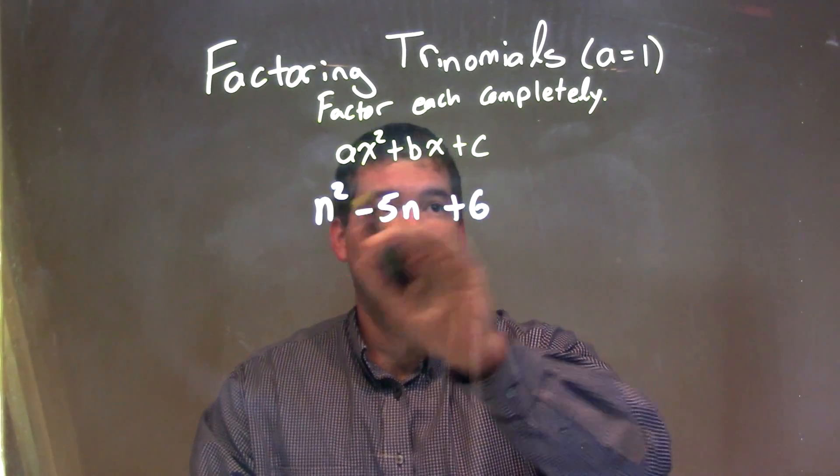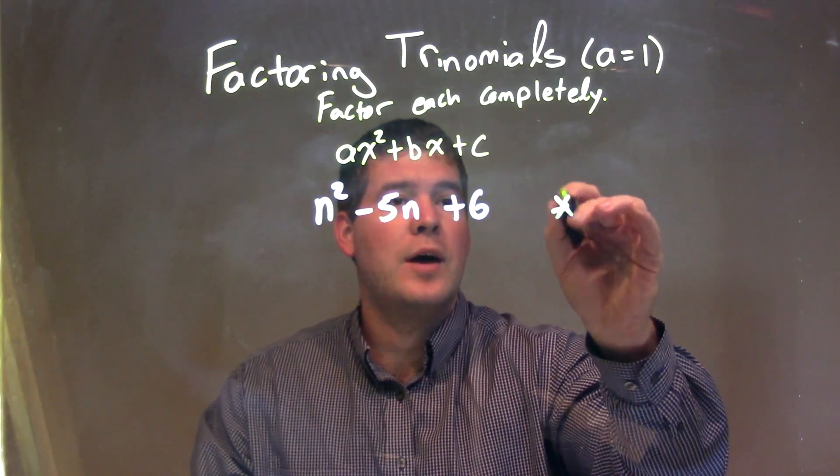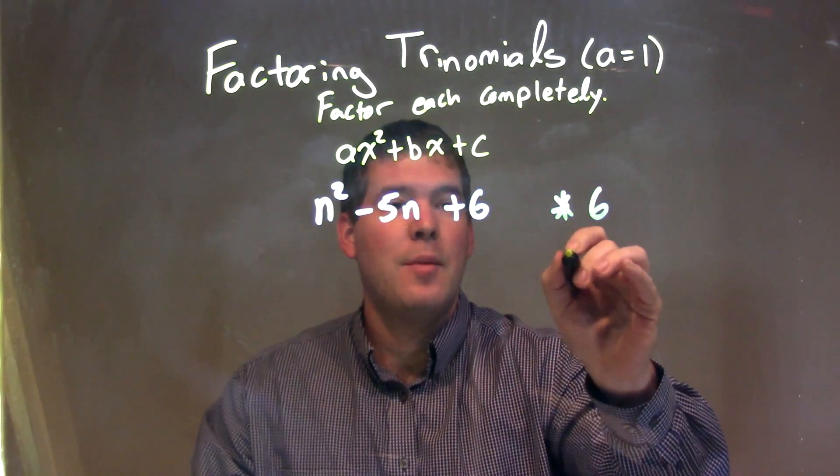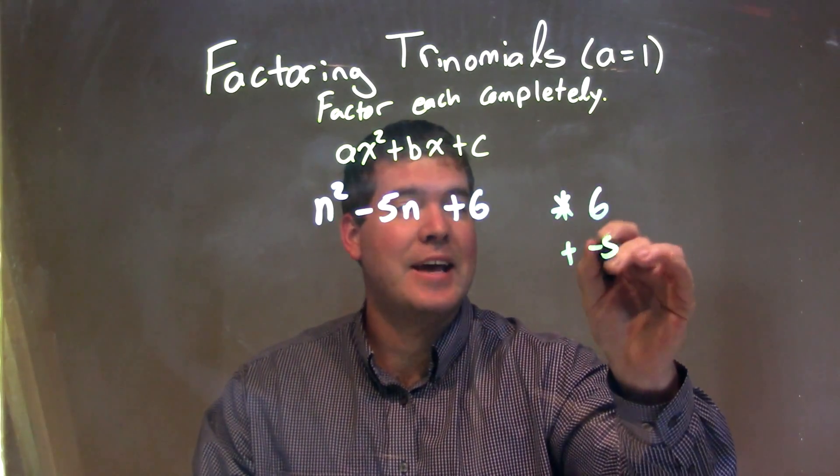What I'm going to do is ask myself the question, because our a value is 1, what multiplies to be my c value of 6, but adds to be my b value, which is negative 5.